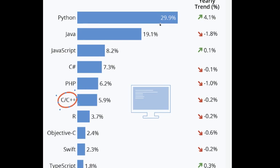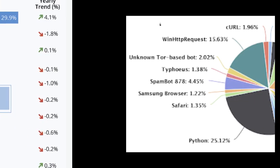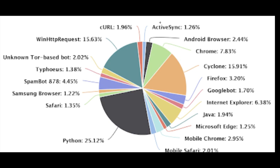TypeScript could be ranked higher if this yearly trend continues. Our second chart is a pie graph. Python's slice is 25.12%, and the smallest slice is Samsung Browser at 1.22%, with Microsoft Edge being the second smallest.